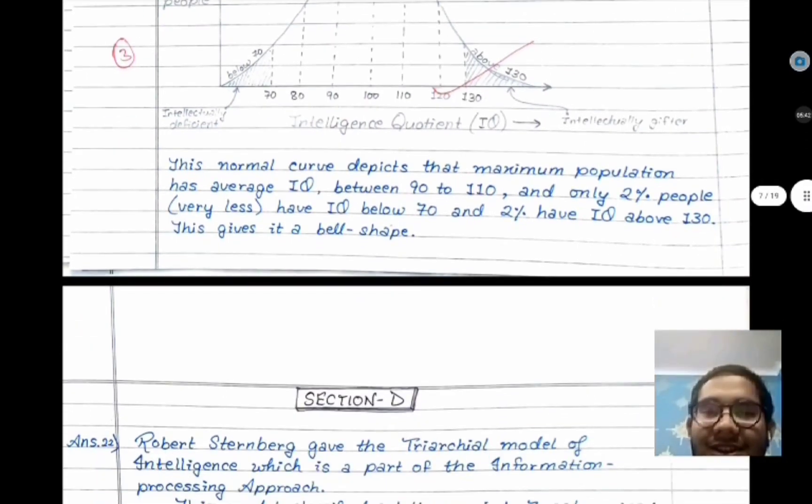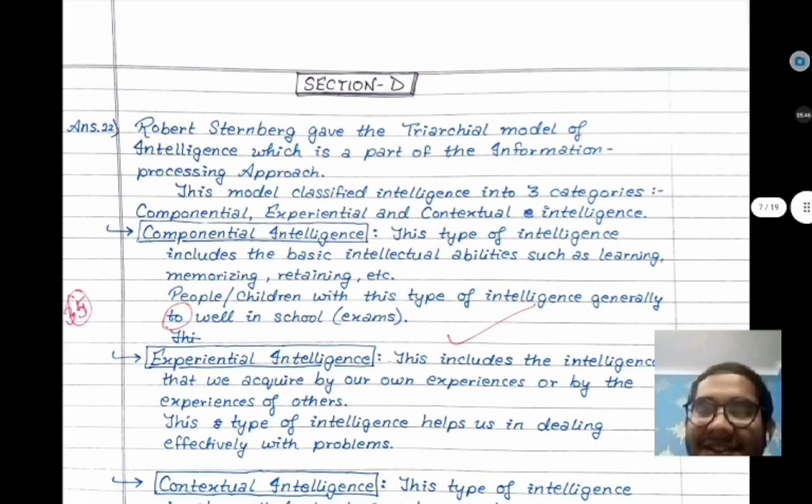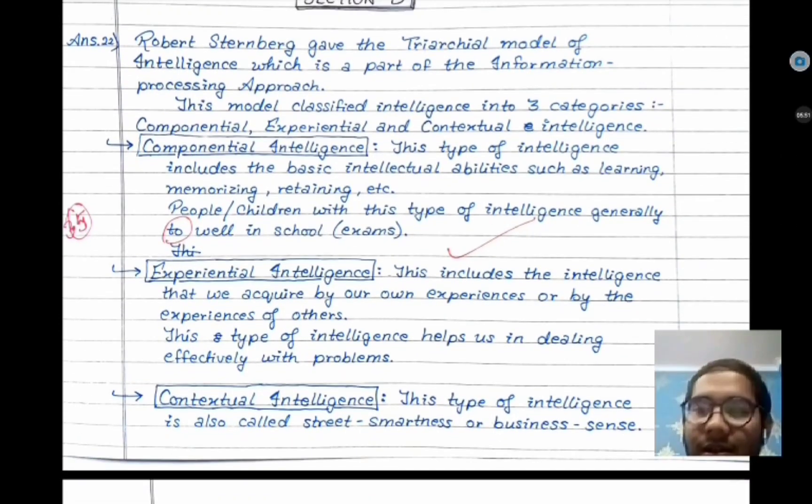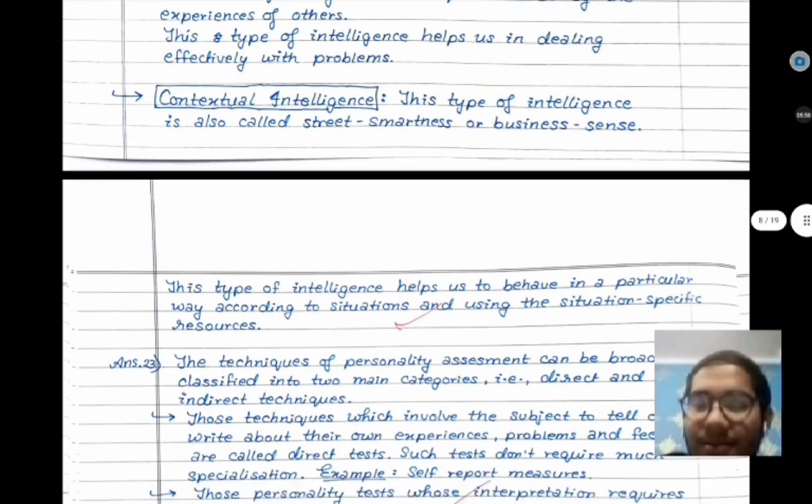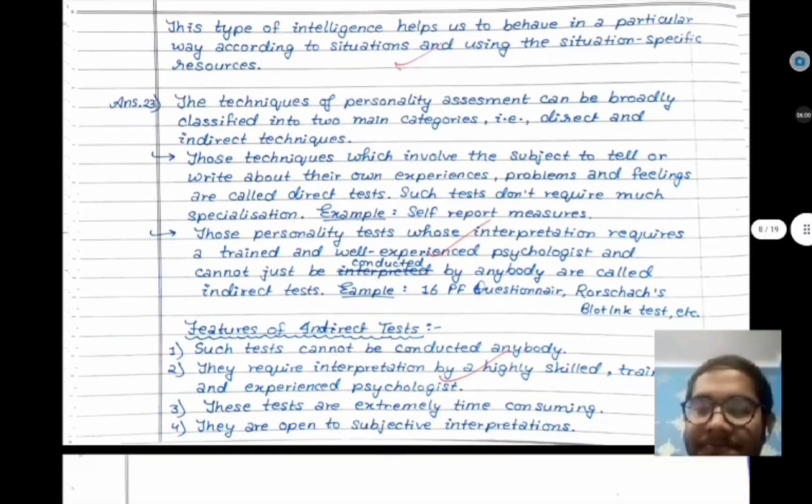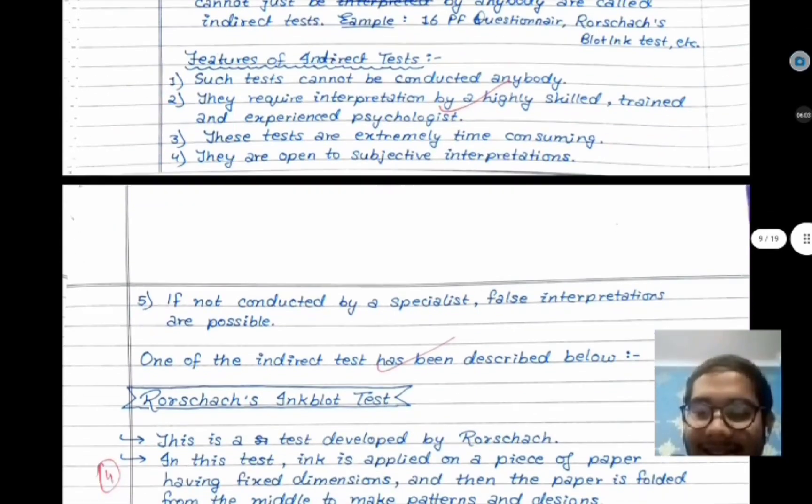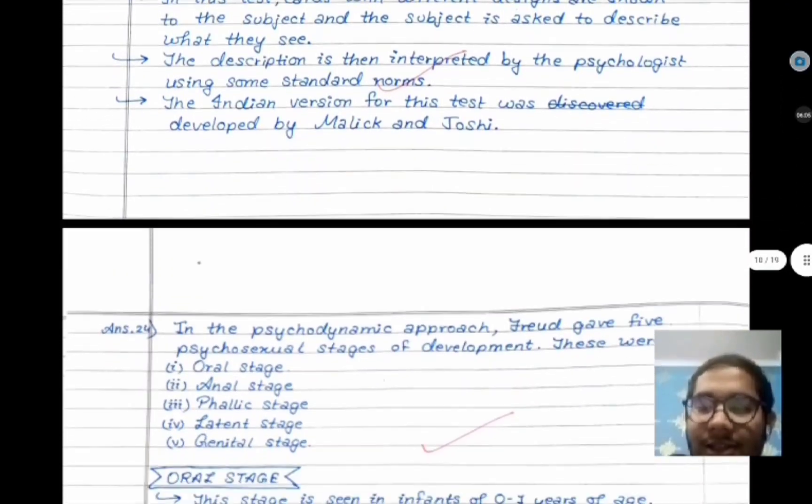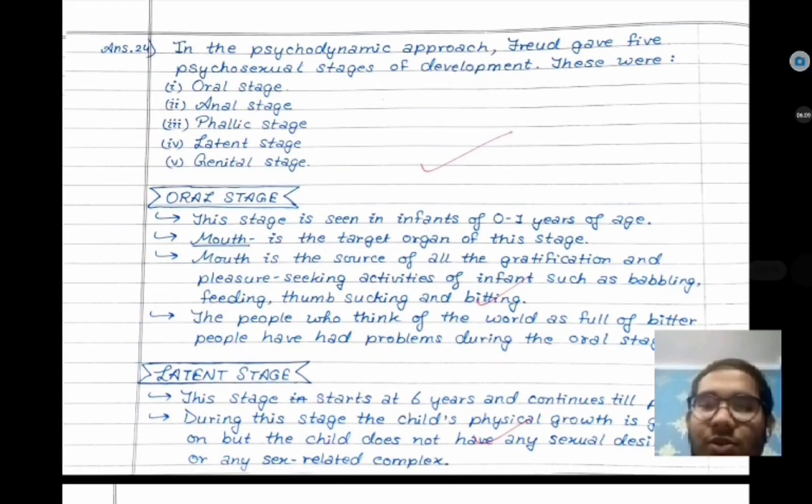Then you have Section D. In Section D I got 3.5 in this. This is the Triarchial Model of intelligence. After that, this is your indirect test of personality. After that, this is psychosexual stages of Freud.